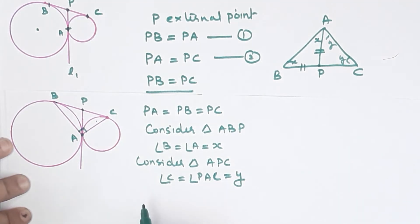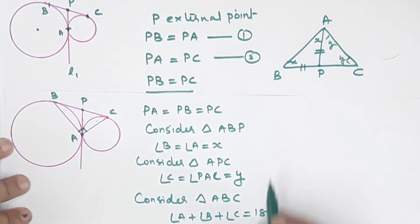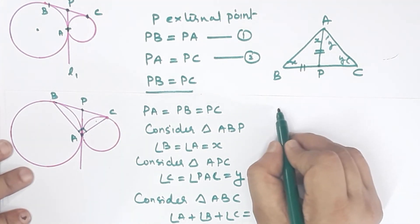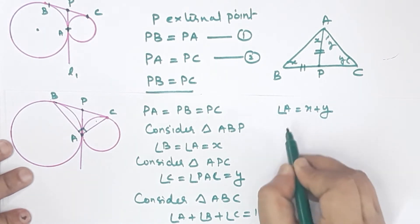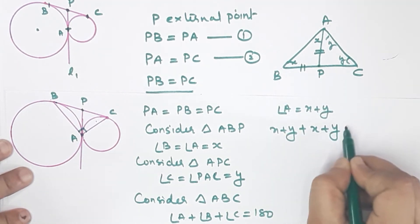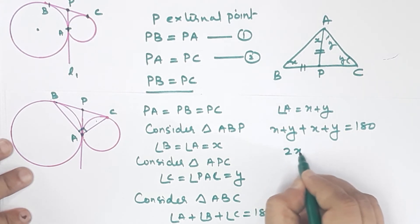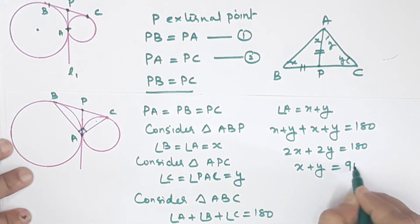Now consider the full triangle ABC. Angle A plus angle B plus angle C equals 180 degrees. Angle A equals x plus y. So (x plus y) plus x plus y equals 180 degrees. That gives 2x plus 2y equals 180 degrees, therefore x plus y equals 90 degrees.